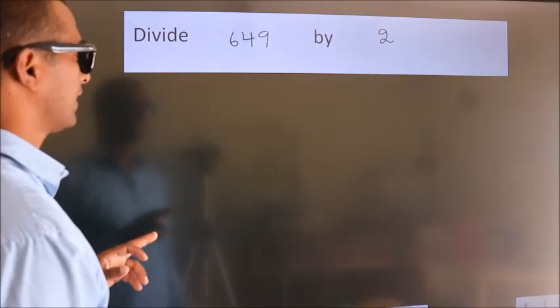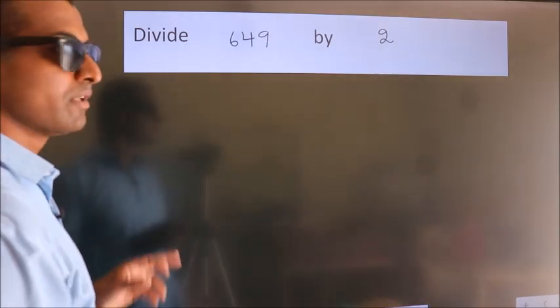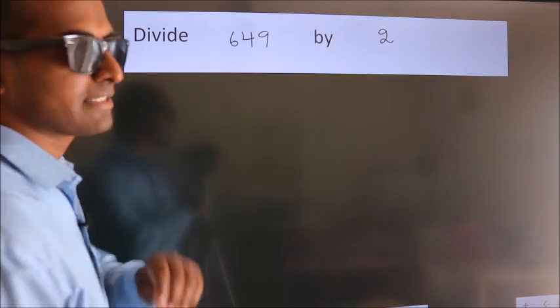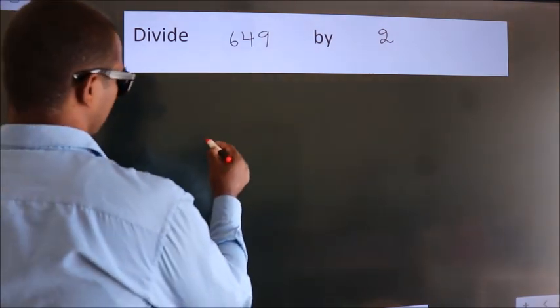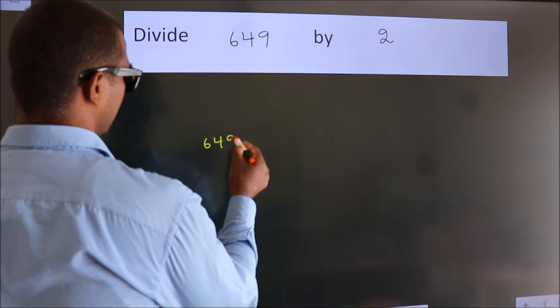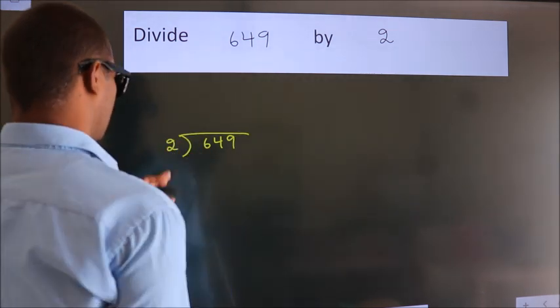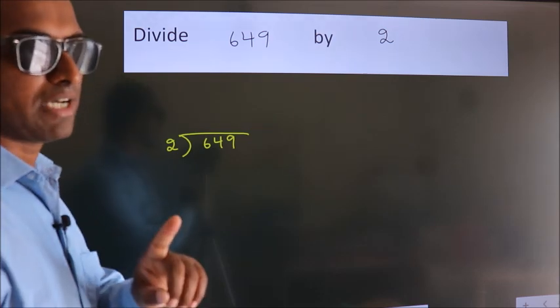Divide 649 by 2. To do this division, we should frame it in this way: 649 here, 2 here. This is your step 1.